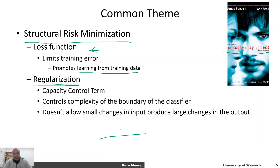That's the essence of both of these methods and a number of other machine learning methods as well. Next, we are going to see how this framework of structural risk minimization can be used to solve other problems in machine learning, specifically regression. Thank you.